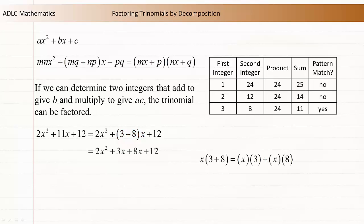Our expression is now 2x² + 3x + 8x + 12. We're going to look at this expression as two pieces and factor each piece separately.